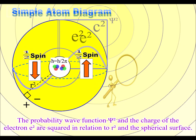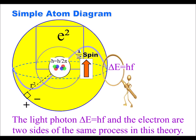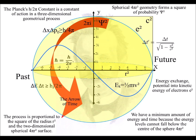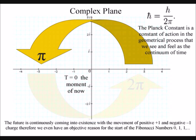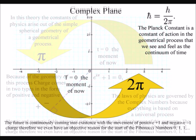When this occurs, the energy levels cannot fall below the center of the sphere, which is the nucleus of the atom. This is due to the process being proportional to the square of the radius and the two-dimensional spherical surface of the sphere. This forms a minimum amount of energy and time, forming a constant of action that we see mathematically as the Planck constant, linked to 2pi representing the circumference of the sphere.